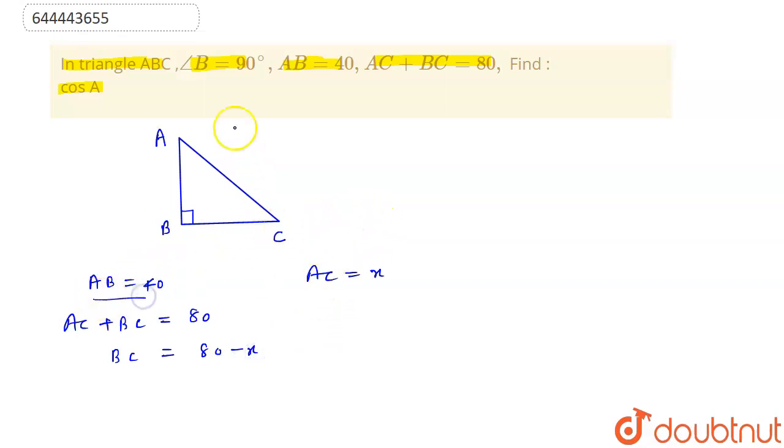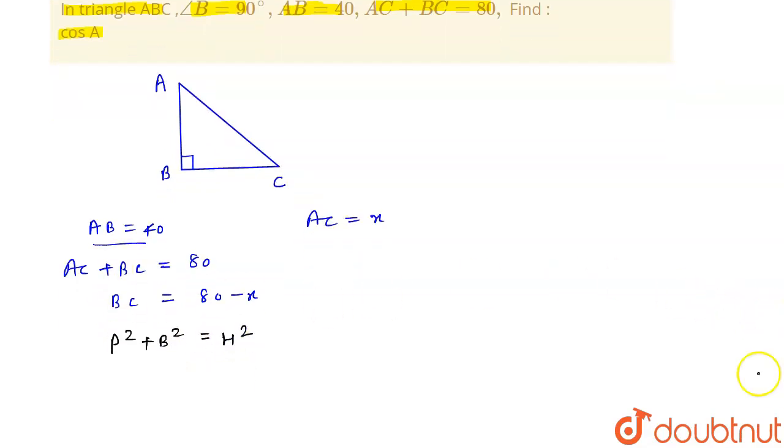Now we will apply Pythagoras theorem for this triangle. So according to Pythagoras theorem, P squared plus B squared is equal to H squared. So it will become 40 squared plus 80 minus x squared equal to x squared.